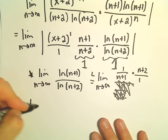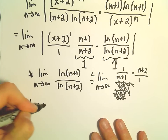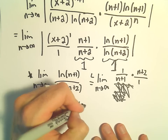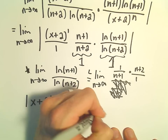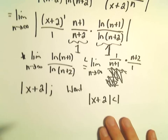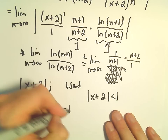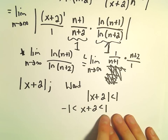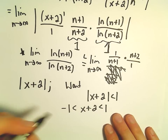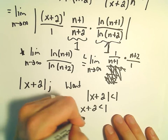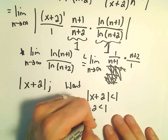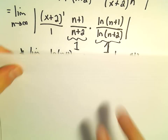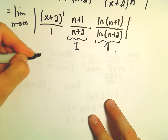So really, we're just left with the absolute value of x plus 2. We want the absolute value of x plus 2 to be less than 1, which tells us that x plus 2 is between negative 1 and positive 1. Subtracting 2, we get negative 3 is less than x is less than negative 1. Now we need to go back and check the endpoints individually.